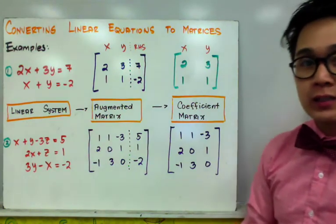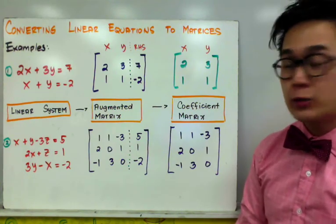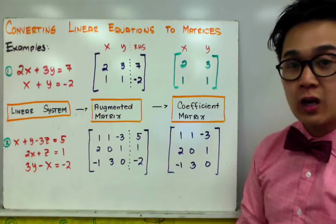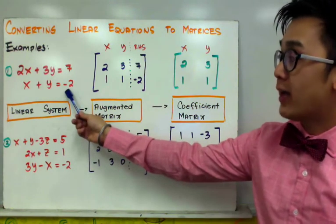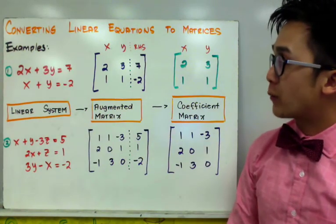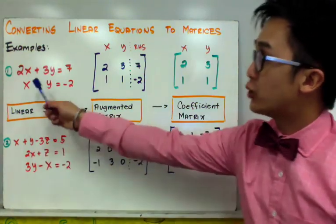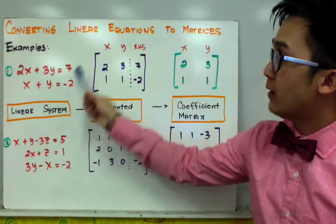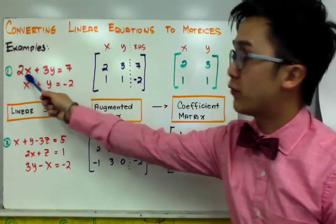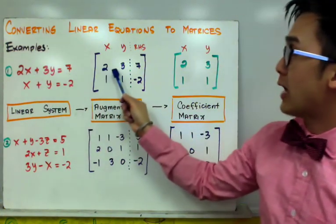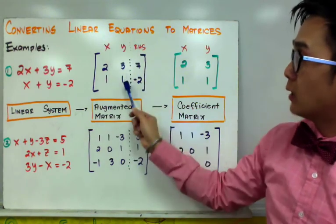A major application of matrices is converting a linear system into matrix form. For example, given the linear system 2x plus 3y equals 7 and x plus y equals negative 2, we can convert this to an augmented matrix by dropping the variables and copying the coefficients. The first row becomes 2, 3, 7 — representing the x column, y column, and right-hand side.